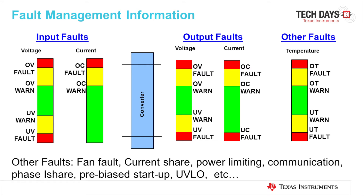There is also extensive fault management information, such as input faults — both voltage and current — output faults in voltage and current, as well as other faults such as temperature. For each parameter there is an over and under warning as well as fault. For example, for voltage, there is an over voltage fault and over voltage warning — any voltage exceeding a maximum over voltage setting of two volts will cause an over voltage fault — and there are also under voltage warnings and faults. There is other fault monitoring as well, such as fan fault, current share fault, power limiting, communication. For multi-phase converters, also a current share per phase fault, pre-biased startup fault, and UVLO.